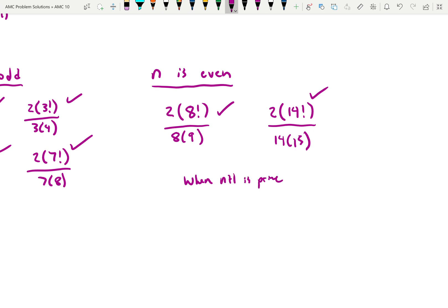So one case we can look at, let's just say when n plus 1 is going to be 3. So that's when n is 2. So 2 times 2 factorial over 2 times 3. We can see nothing in the numerator is divisible by 3. So that won't work.